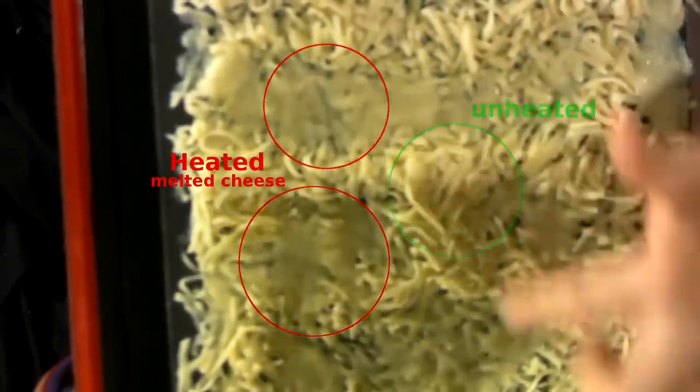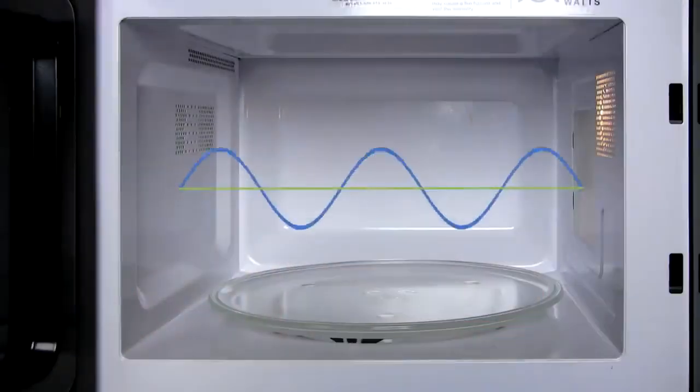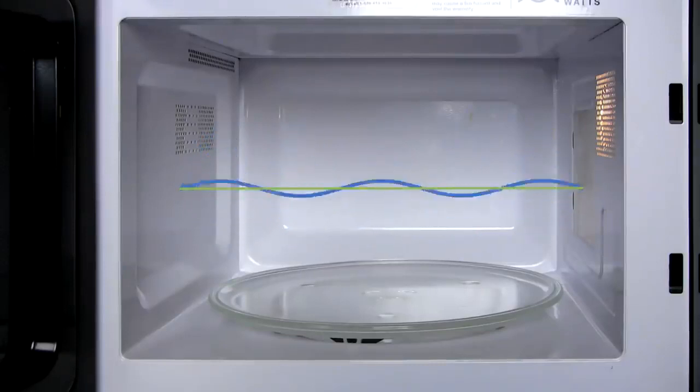You can see on here sections where the cheese is completely melted and other sections where it's completely unheated. The oven's metal walls only reflect waves of a length that fits inside the oven. This standing wave causes hot and cold spots inside the oven.